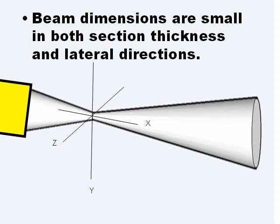Another assumption is that the dimensions of the beam are only two, not three. In reality, the ultrasound beam has three dimensions: axial resolution, lateral resolution, and elevational resolution. Elevational resolution is a dimension not shown in the picture, but it does produce artifacts.